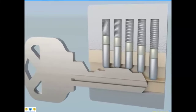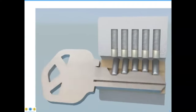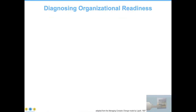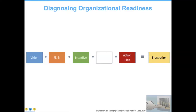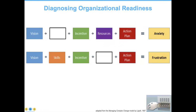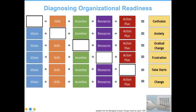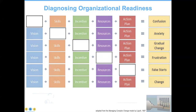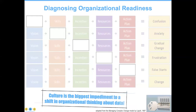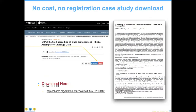When I look at an organization and I see vision, skills, incentive, action plan, and frustration, I know that they're missing the resources. When I see anxiety as the symptom, I know they're missing skills. Only when all of these things line up correctly does one achieve change. And that's the main reason most organizational data programs, including data strategy objectives, do not succeed. Culture is the biggest impediment to shifting thinking about organizational data. If you're really passionate about this, I have a free no-registration case study download that you can use to go a little bit further into that topic.